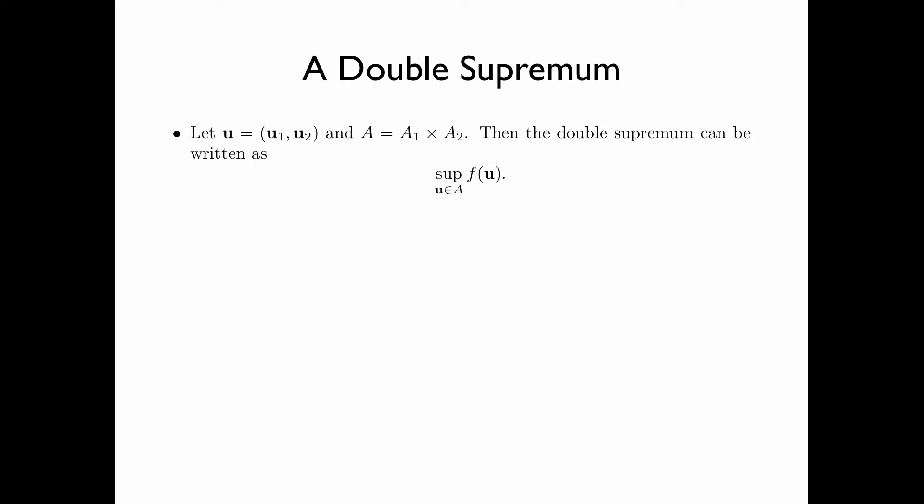Let u be the pair (u_1, u_2), and A be the Cartesian product of A_1 and A_2. Then the double supremum can be written as the supremum of f(u) over all u in A.